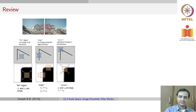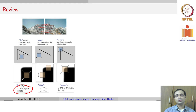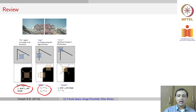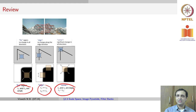In the Harris corner detector, we build the autocorrelation matrix and take an eigen decomposition of it. When lambda 1 and lambda 2 — the two eigenvalues of your autocorrelation matrix A — are small, the region is flat. When one eigenvalue is much greater than the other, it is an edge. And when both eigenvalues are large, the patch has a lot of changes in multiple directions and we call such a point a corner.